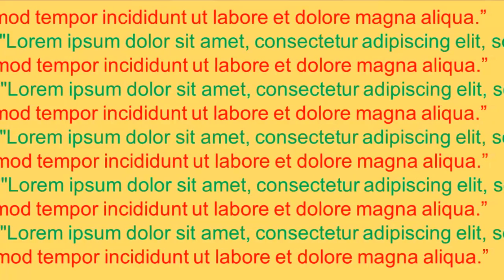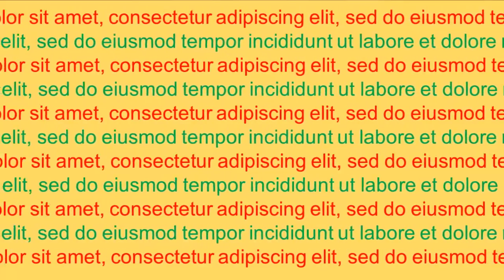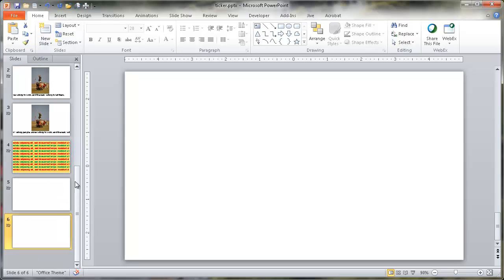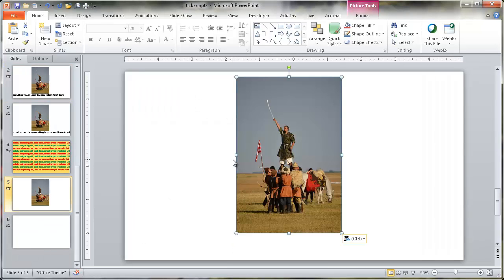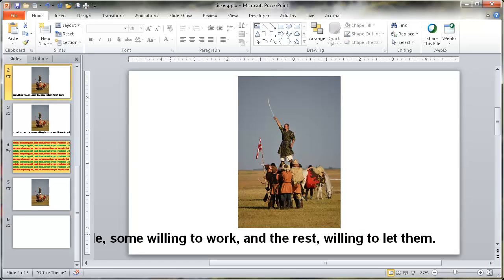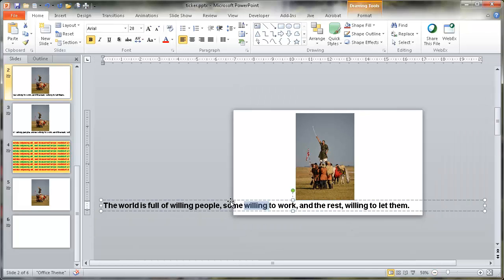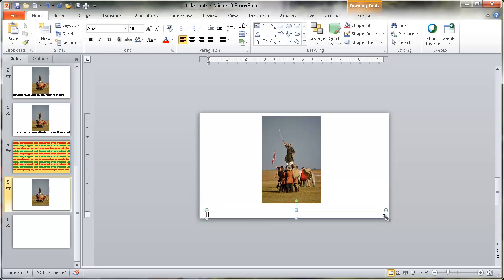I'll show you how to create these scrolling ticker tape effects. Let's go into a blank slide. I'll click to add new slides so I have them available. I'll take this picture and copy it over — Command C, Command V to paste. I'll take the text here, select it all with Control A, Control C to copy, then insert a text box under the drawing group and draw it out, then Control V to paste.